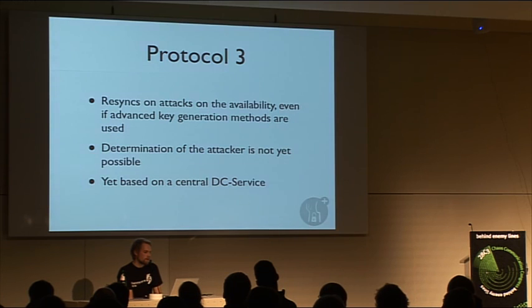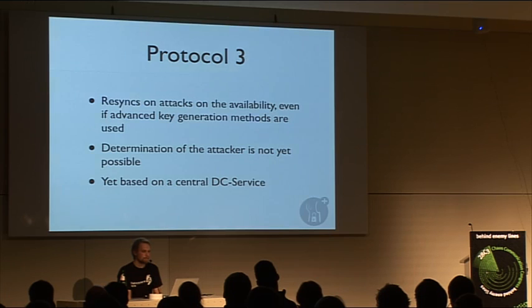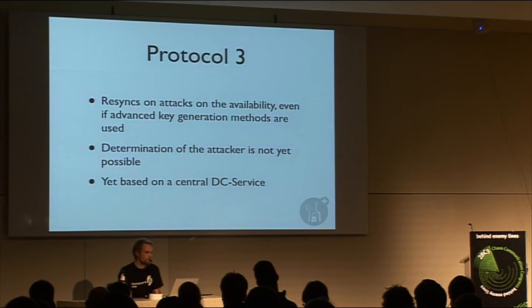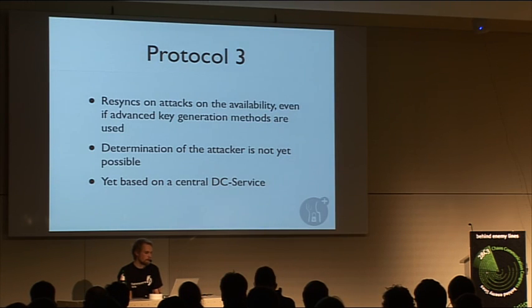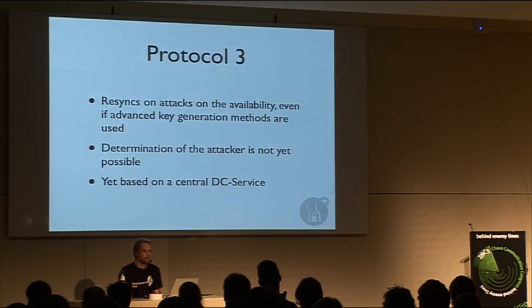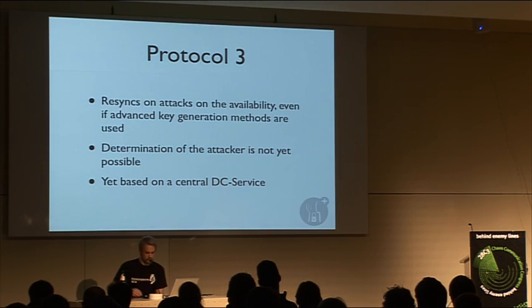The protocol also automatically resyncs after attacks on availability — if someone is disturbing communication, the protocol resyncs automatically, even when advanced key generation methods are used. The current flaws are that determination of the attacker is not yet possible since there is no management network available, and it is still based on a central DC service.